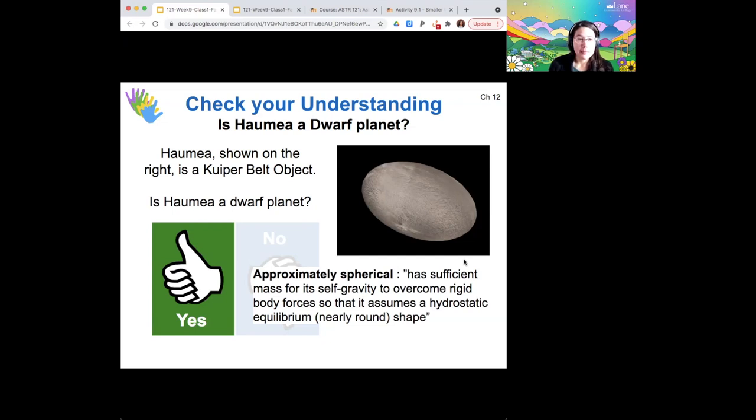But for NASA, approximately spherical means that it maintains an equilibrium shape because it has enough mass for its self-gravity to overcome rigid body forces. So clearly NASA's definition of approximately spherical is a little bit more involved than our definition. So even unexpected things like Haumea still count as dwarf planets.